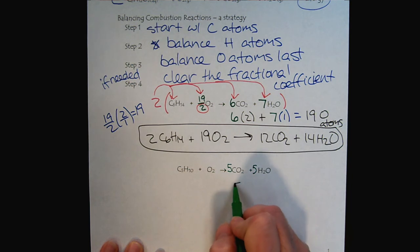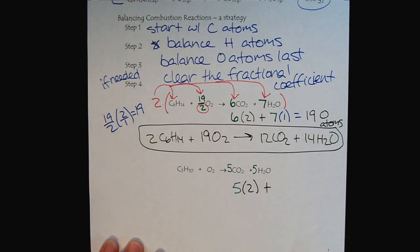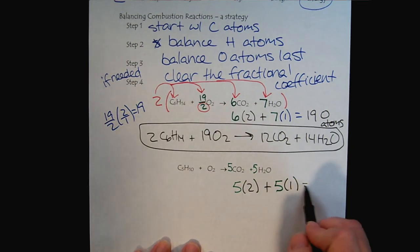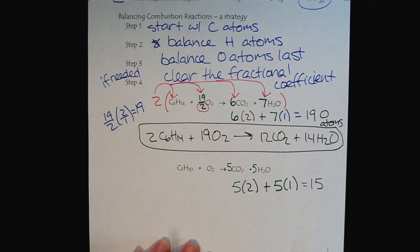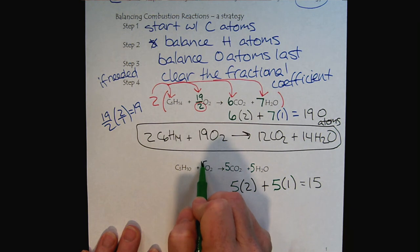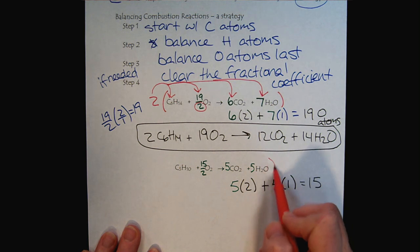Now, we need to balance the oxygens. If we have 5 CO2s, we get a 5 from the coefficient and a 2 from the chemical formula. And then, a 5 from the coefficient and a 1 from the chemical formula. So, on the right side of the equation, we have 15 oxygen atoms. Once again, because of it being diatomic, we're going to have to use our fractional coefficients. And then, that sends off an alert. Not allowed to do that.